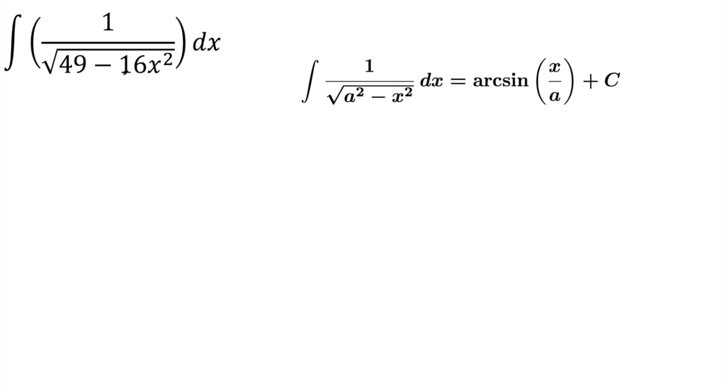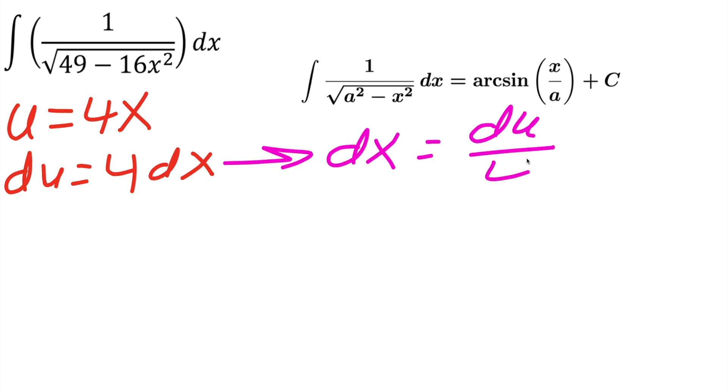Now first, we need to address this whole 16x squared, it's not like x squared. So we could use u substitution. If we say that u is equal to 4x, then our du term would be 4 dx. At this point, you can also rewrite this as dx is equal to du divided by 4. All we did was divide by 4 on both sides. And now we can rewrite this integral.